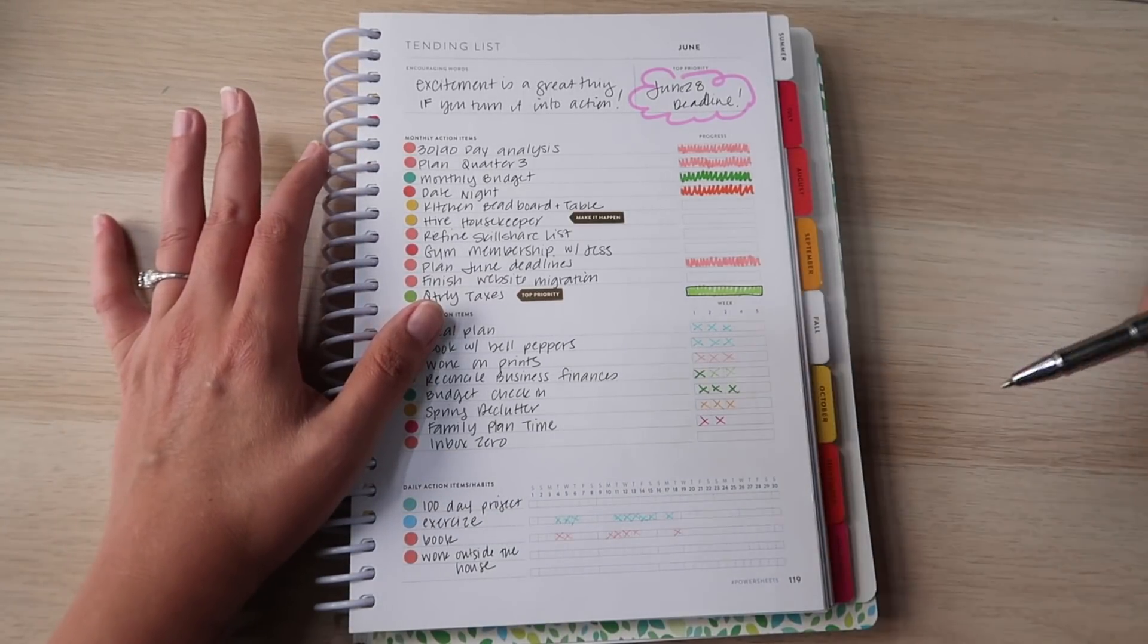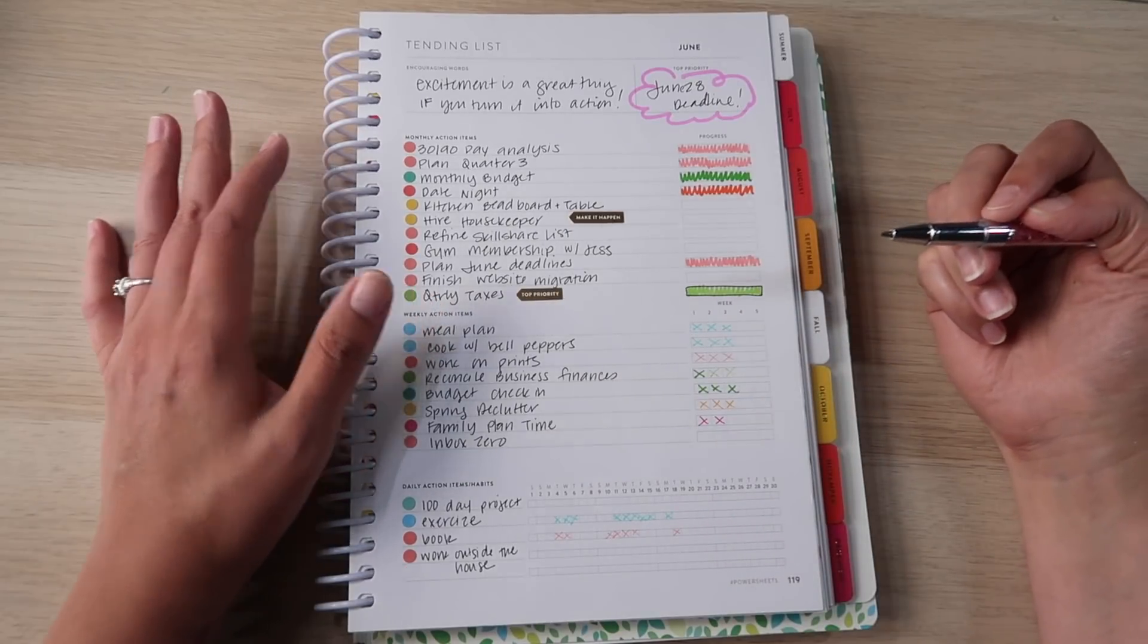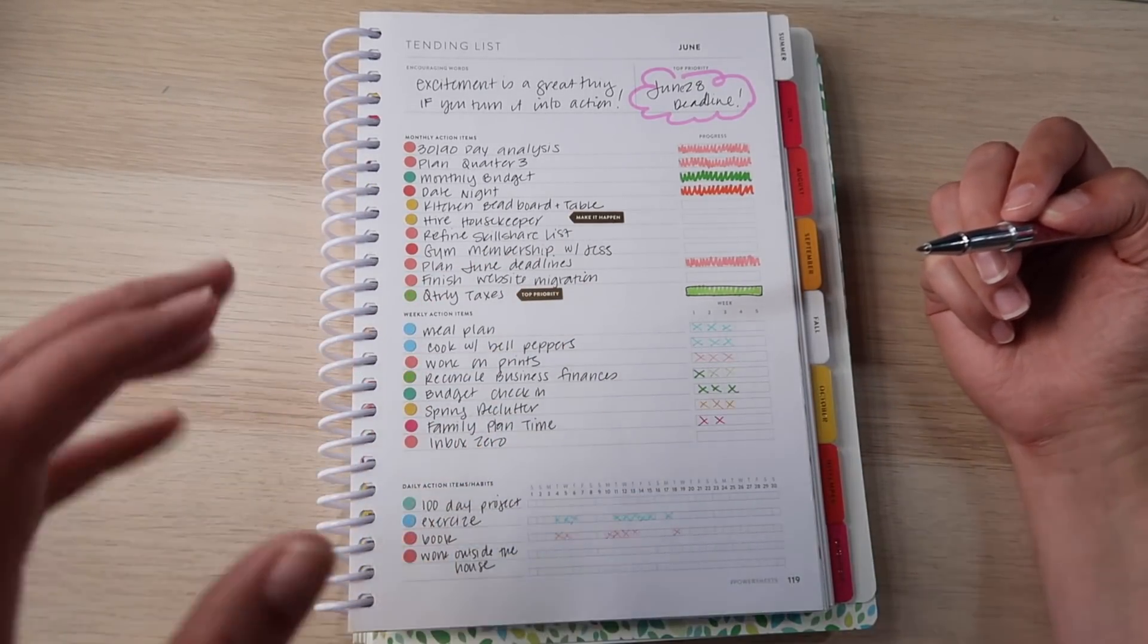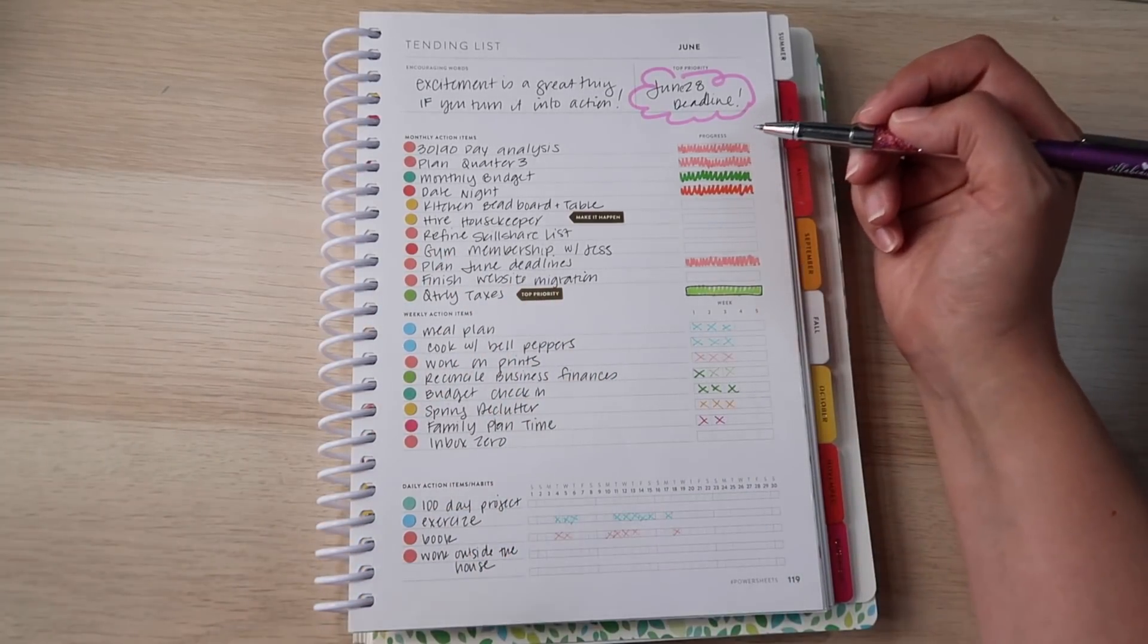Did my analysis, planned out quarter three. It's not fully planned out, but a lot of the plans I wanted to make are made. I still need to refine those plans and I'm going to work on that next month or maybe while I'm traveling. But for now, the basics are planned out.